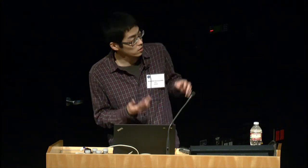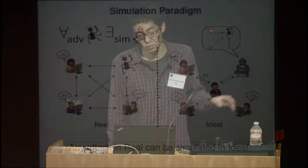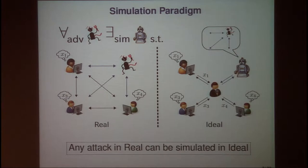In this paradigm, a protocol is defined to be secure if for any adversary that performs an attack in the real world, there exists a simulator. This simulator simulates the view of the adversary and the output of the honest party, and the view of the adversary in the real world is indistinguishable from the simulated view of the simulator. Informally, this definition says that any attack in the real world can be simulated in the ideal world, guaranteeing that the real world is as secure as the ideal world.